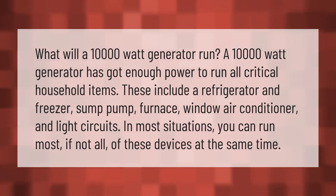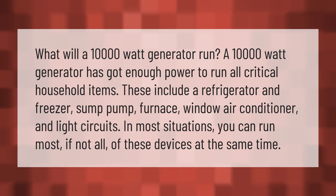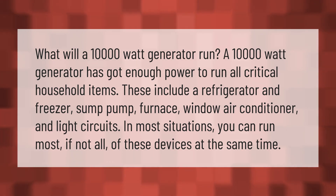A 10,000-watt generator has enough power to run all critical household items. These include a refrigerator and freezer, sump pump, furnace, window air conditioner, and light circuits. In most situations, you can run most, if not all, of these devices at the same time.